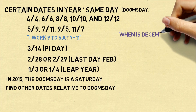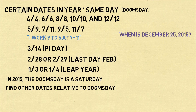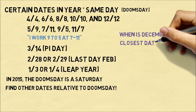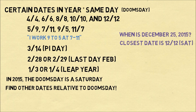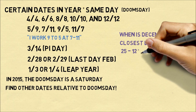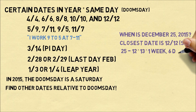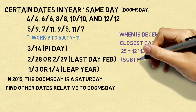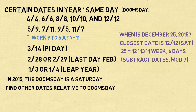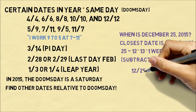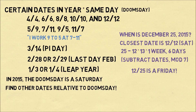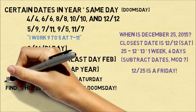Let's do another example — let's figure out when Christmas of 2015 will be. The closest memorable date is 12-12, which we know falls on a Saturday. The 25th is 13 days later, which is one week and six days later. Mathematically, you can think about this using modulo arithmetic — subtract the dates and reduce them modulo 7. Since the 25th is one week and six days later, December 25th will be a Friday.